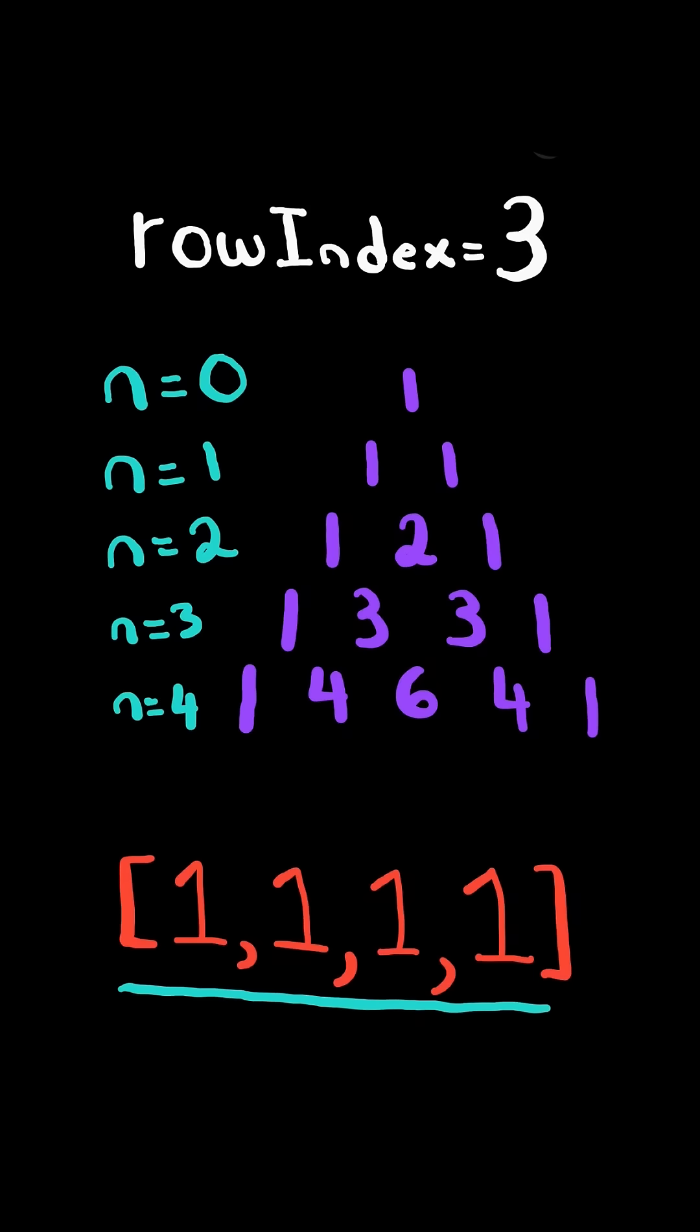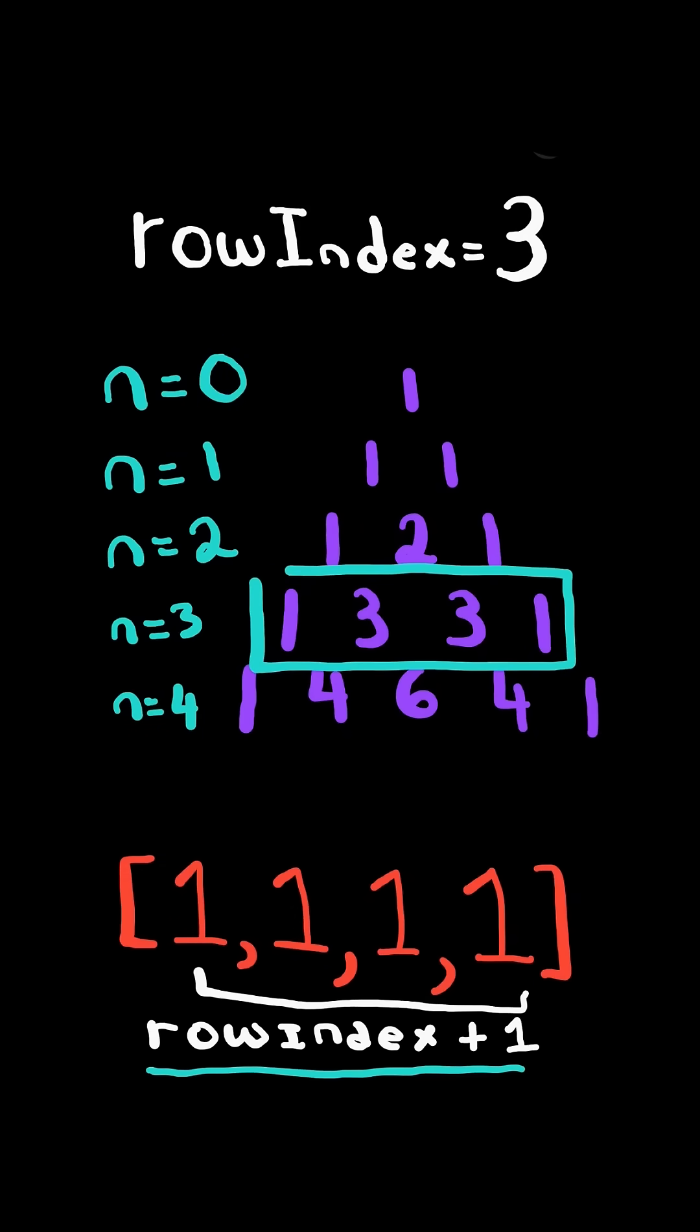First, we initialize an array of all ones with length row index plus one. This will match the desired output size.